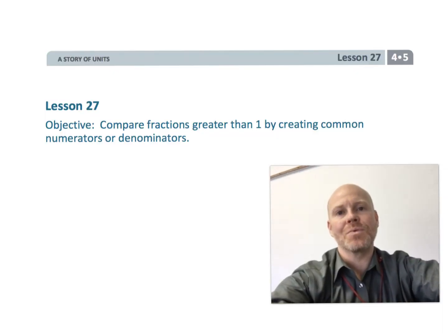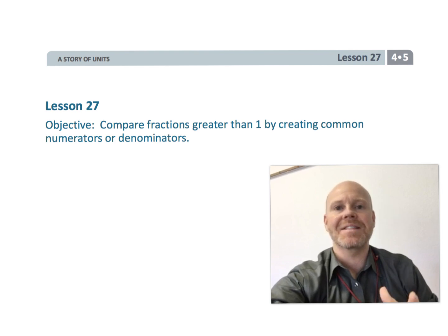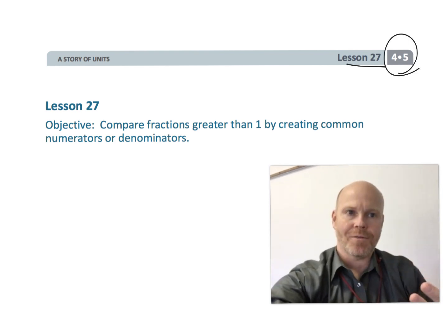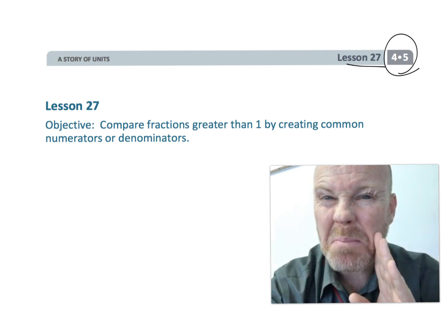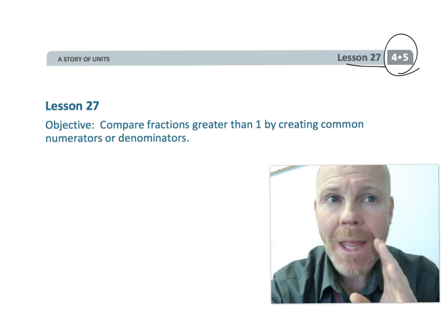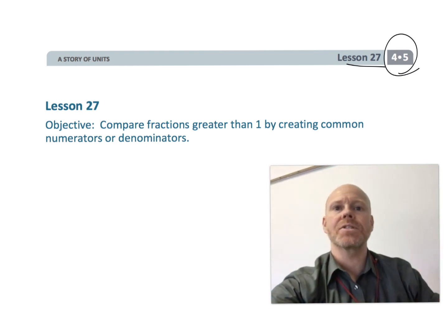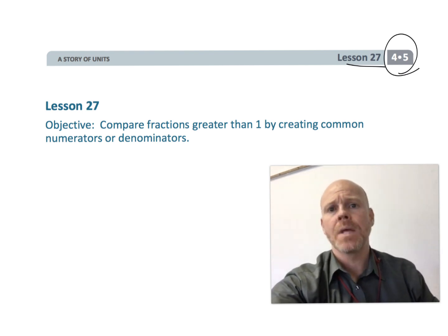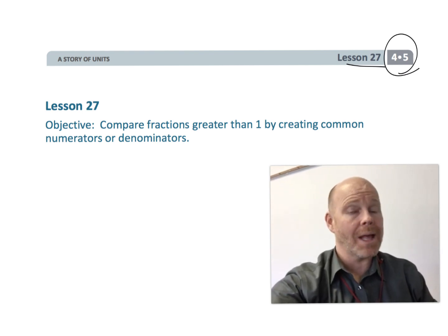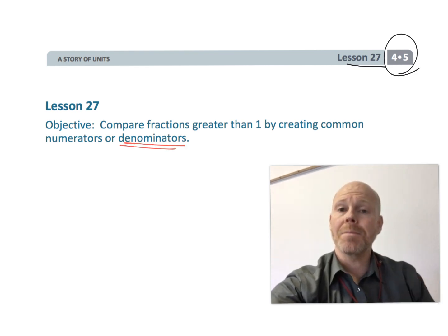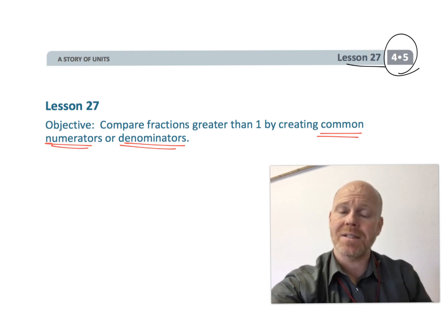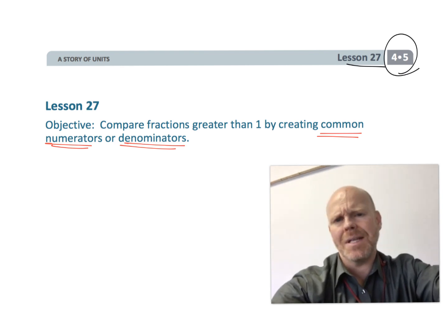This is fourth grade module 5 lesson 27. Students are going to continue comparing fractions, this time with fractions greater than one. Sometimes we'll need to take those improper fractions — though we don't call them that anymore — and convert them into mixed numbers, then compare. We'll use tape diagrams, area models, and start using the standard algorithm. Students don't need total mastery of the algorithm yet; they can still use the scaffolds of the area model or tape diagram.